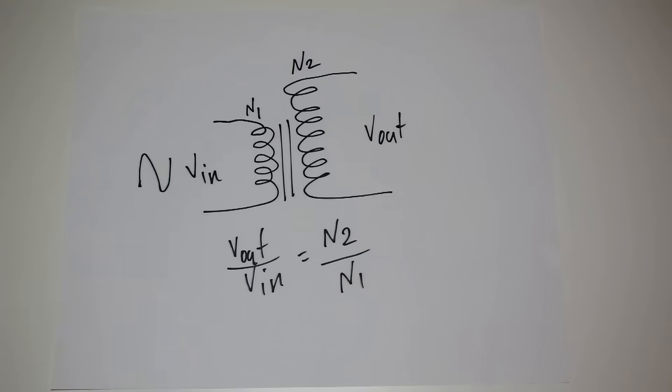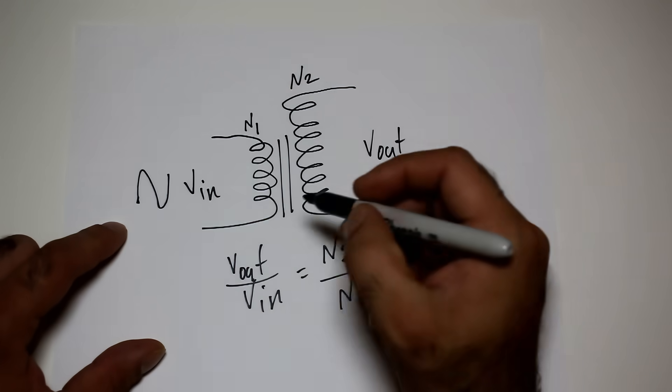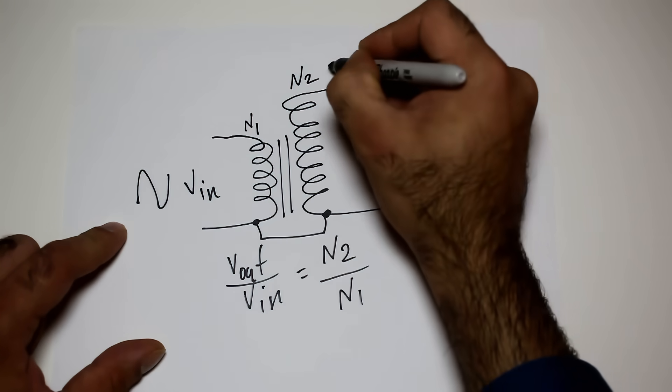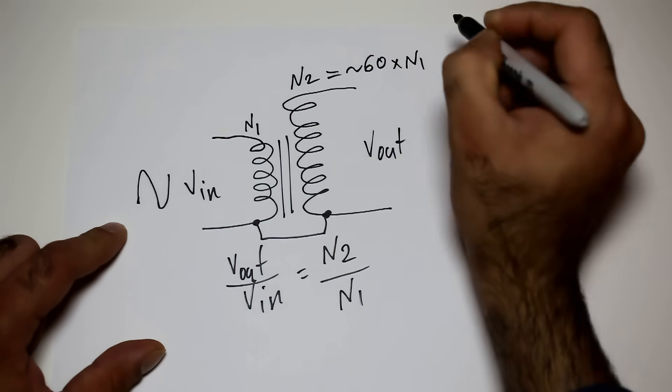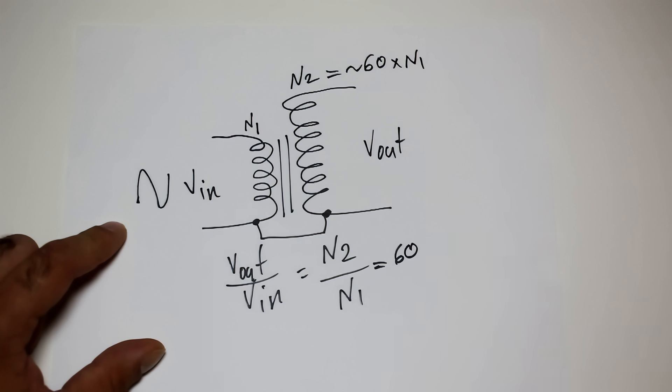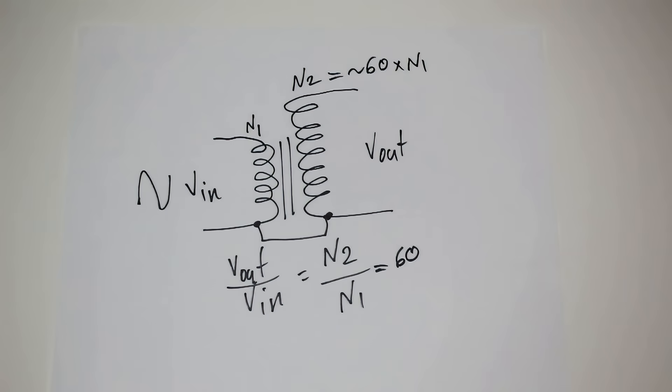So if the secondary to primary turn ratio is 100, if I apply 10 volt AC at the input, I'll have 1000 volt AC at the output. Now for my transformer, I use this one that's generally used in a car. It's called the car ignition coil and is responsible to generate sparks across the spark plugs that ignite the fuel in the cylinder. This specific transformer has this wire arrangement and it has a secondary to primary ratio of around 60. So the output voltage will be 60 times the input.